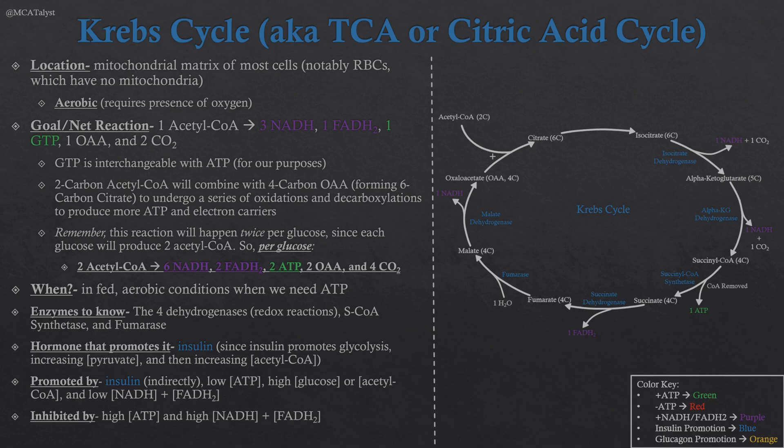Glucagon has often been the antithesis to insulin — if a process was promoted by insulin, it was inhibited by glucagon. However, the Krebs cycle is pretty much always on unless we're in anaerobic conditions. As another example, beta oxidation — fatty acid breakdown — occurs during long-term fasting after roughly a day. We break down fat into acetyl-CoA, and beta oxidation is promoted by glucagon. Since that process produces more acetyl-CoA, glucagon can actually indirectly promote the Krebs cycle.